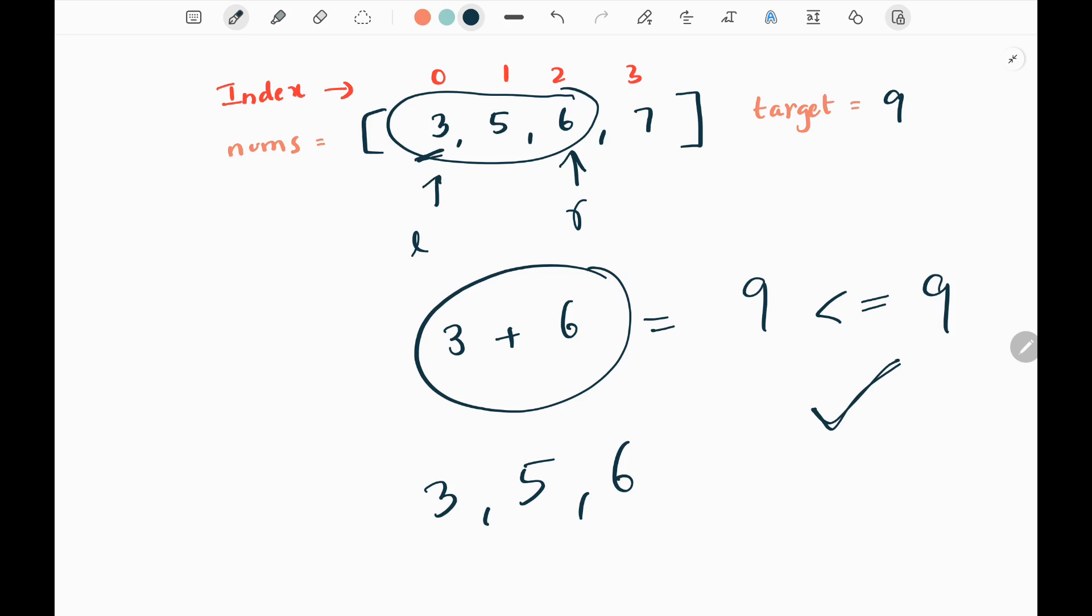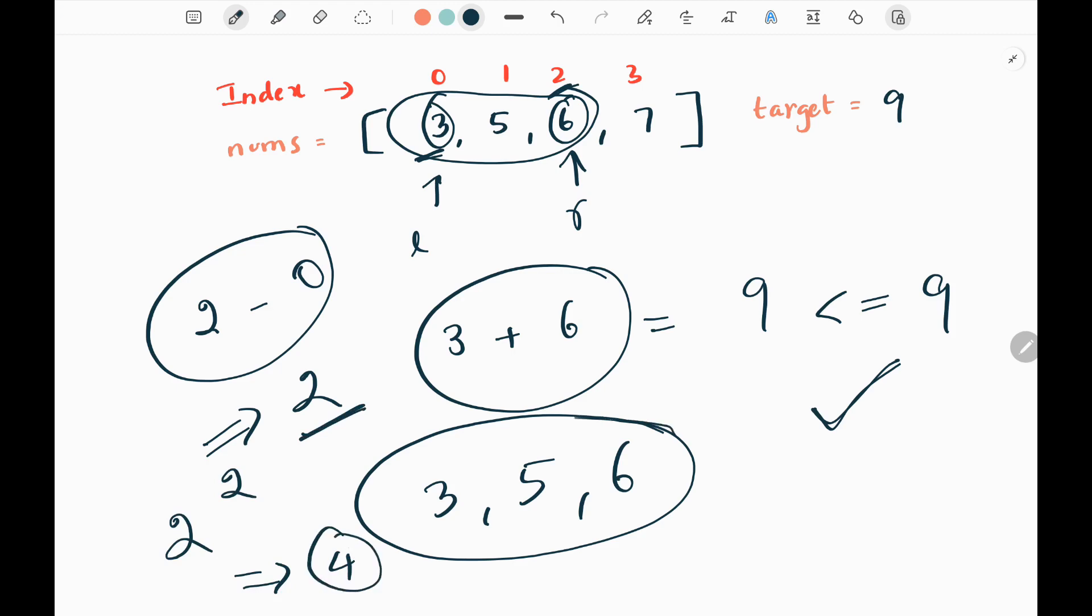Now we need to count the number of subsequences that can be formed using these three values, the possible combinations. To calculate that, I need to pick the maximum value index, that is 2 here. The 6 value index is 2. And the minimum value index, that is 0. Then I will take difference between these two values. So 2 minus 0, I'm going to get 2. Then I will take 2 power this value, that is 2. So I'm going to get 4. So 4 possible combinations can be formed using these three values. I will be having a count variable. I will add 4 to the count variable. So count will be 4 now.